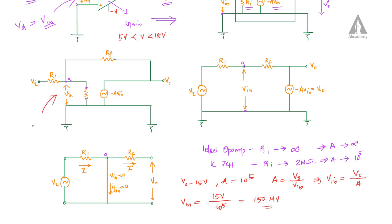So V_in is on the order of 150 microvolts. This value of 150 microvolts is approximately equal to 0 and can be considered as 0 voltage. Since the output voltage is 15 volts and the differential input voltage is only 150 microvolts, it can be considered as zero voltage — equivalent to ground potential at the non-inverting terminal.